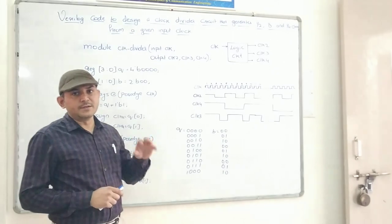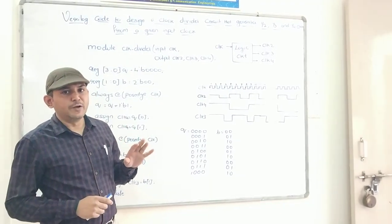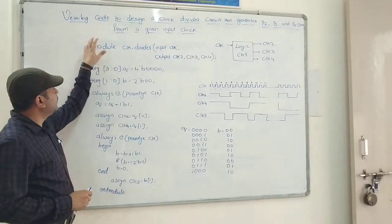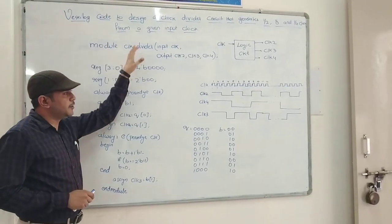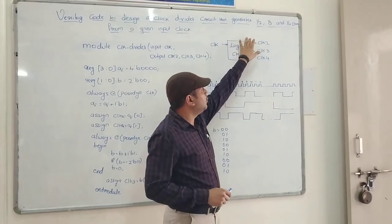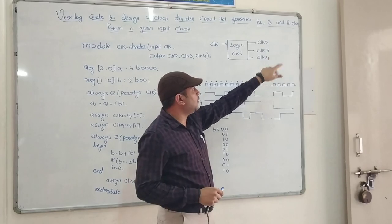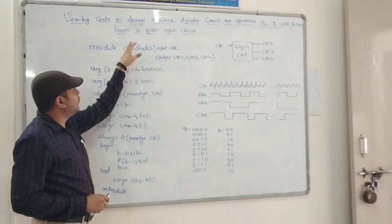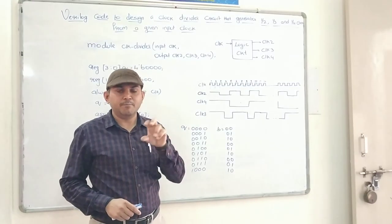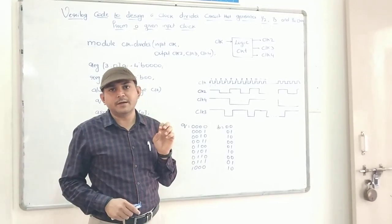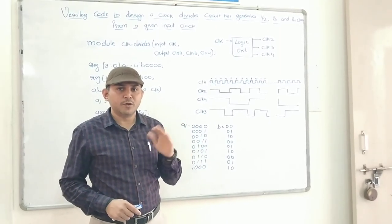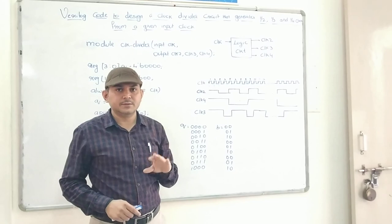Good morning students. In this video I will explain the third interfacing program. The question here is: we have to write a Verilog code to design a clock divider circuit that generates 1/2, 1/3, and 1/4 of the clock from a given input clock. It means there is an input clock supplied by the kit and we have to utilize that clock and divide the frequency into half, into 1/4, and into 1/3. So that is the task.